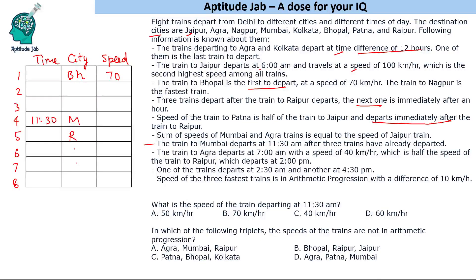Now let us look at the timings. Mumbai is at 11:30. We also see 6 AM, 7 AM, and 2:30 AM mentioned. These three times are all before 11:30, so we place them as trains one, two, and three: 2:30 AM, then 6 AM, then 7 AM.